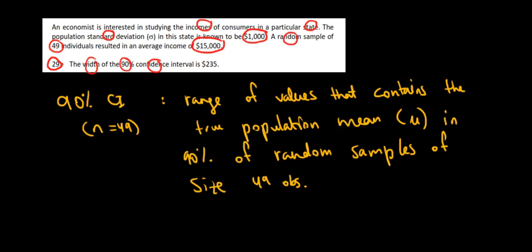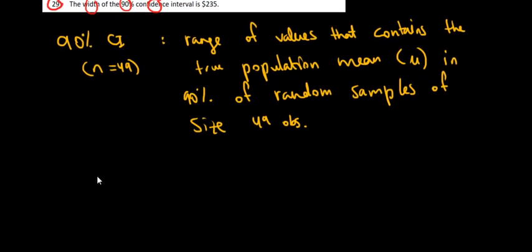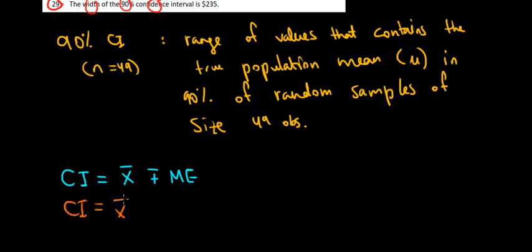Now how do we find the confidence interval? The confidence interval equals the sample average plus or minus a margin of error. The margin of error is the critical value of the z-distribution times the standard deviation of the population divided by the square root of n.